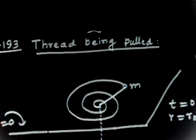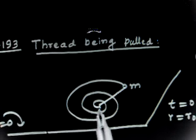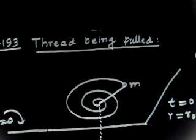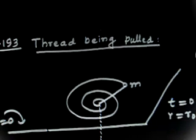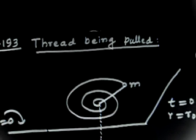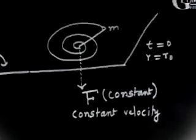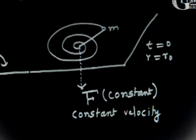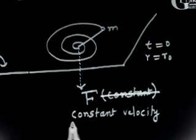The other end of the thread is drawn into the hole at O with a constant velocity. So there is a hole in the table, the thread passes through that hole, and the thread is pulled downward with a constant velocity. So velocity is constant — force is not constant, velocity is constant. Therefore this force is variable.